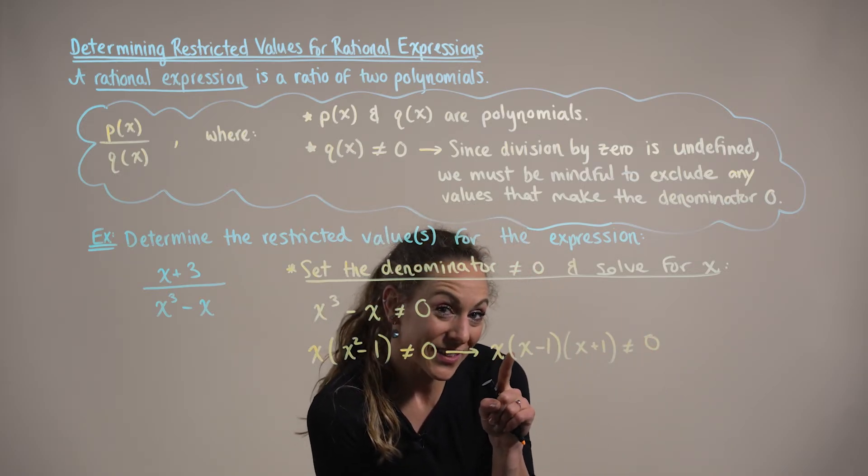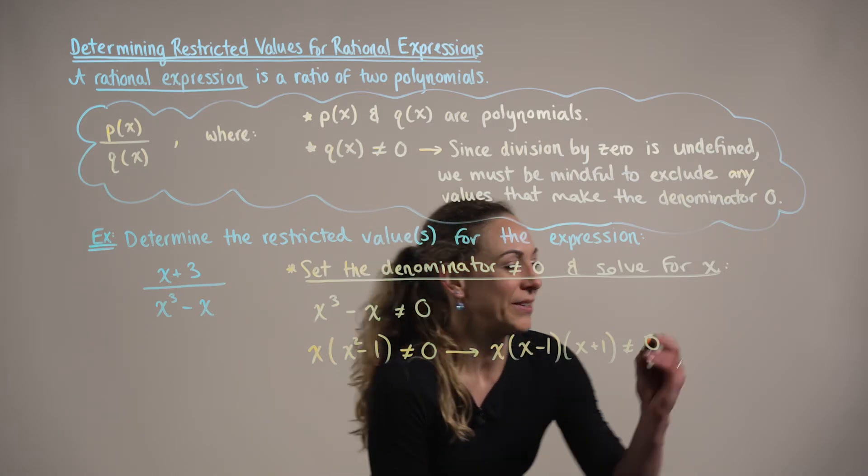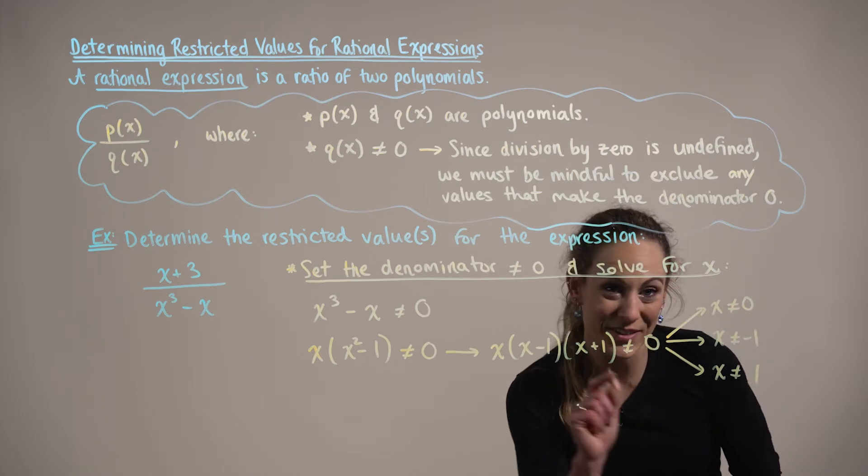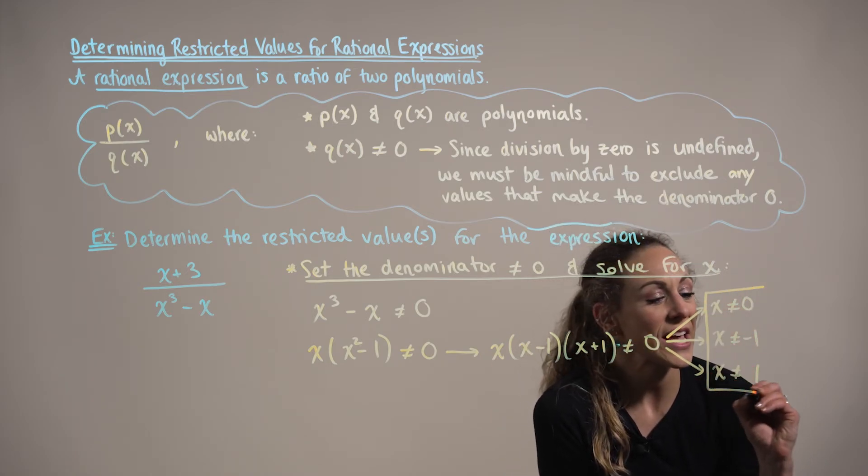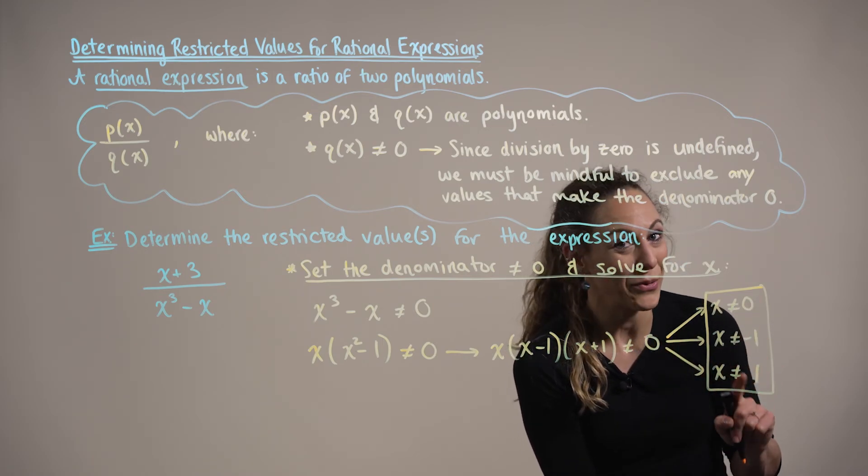So we now consider each one of these factors set not equal to 0 to find the restrictions. In solving each one of these cases for x, we can see that x could be any real number except 0, negative 1, or 1.